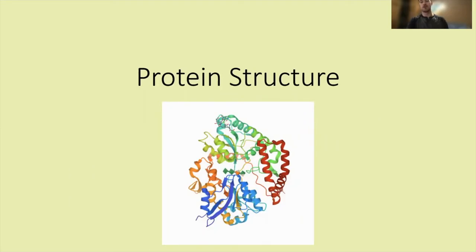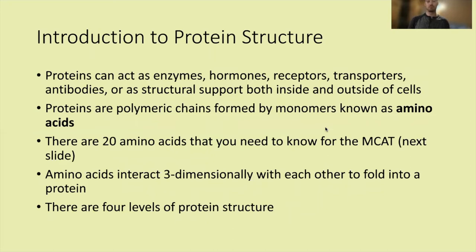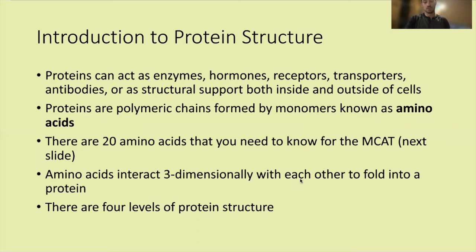So we'll dive right in. The first thing we're going to talk about is protein structure, which is very important. Most of the material here is extremely high yield on the MCAT, especially the bolded items on each slide. Proteins function as enzymes, hormones, receptors, transporters, antibodies, or structural support inside and outside the cell. Proteins are polymeric chains formed by monomers known as amino acids, and there are 20 amino acids you need to know for the MCAT.